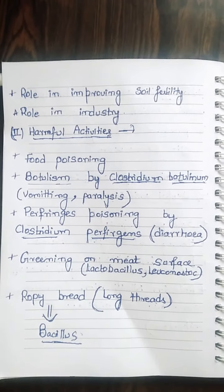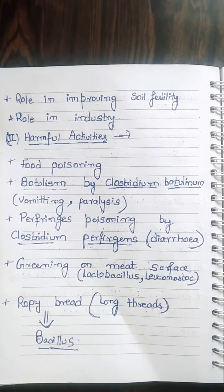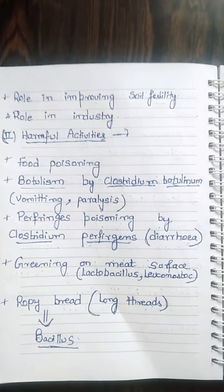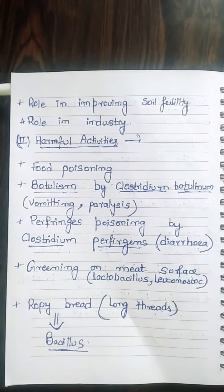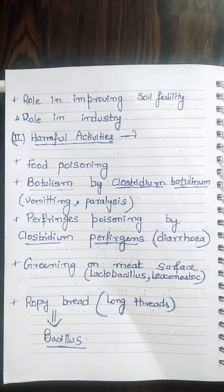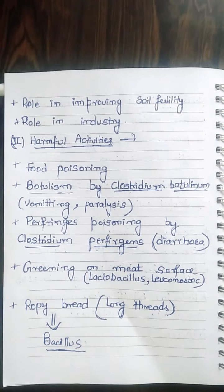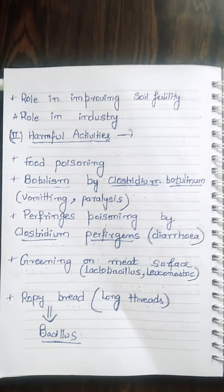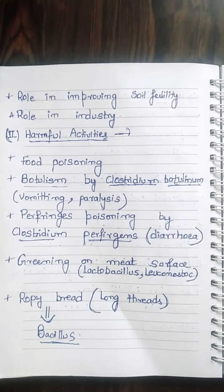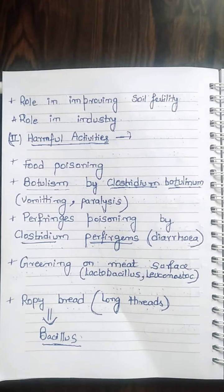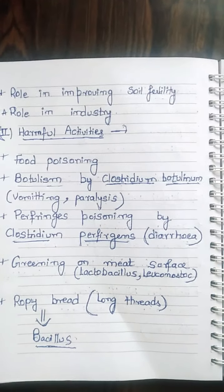Another harmful activity is food poisoning caused by Clostridium perfringens, with diarrhea as the main symptom. Greening on meat surface is caused by Lactobacillus and Leuconostoc. The last harmful activity is ropy bread — when you see thread-like structures in bread, it is due to the harmful activity of bacteria.